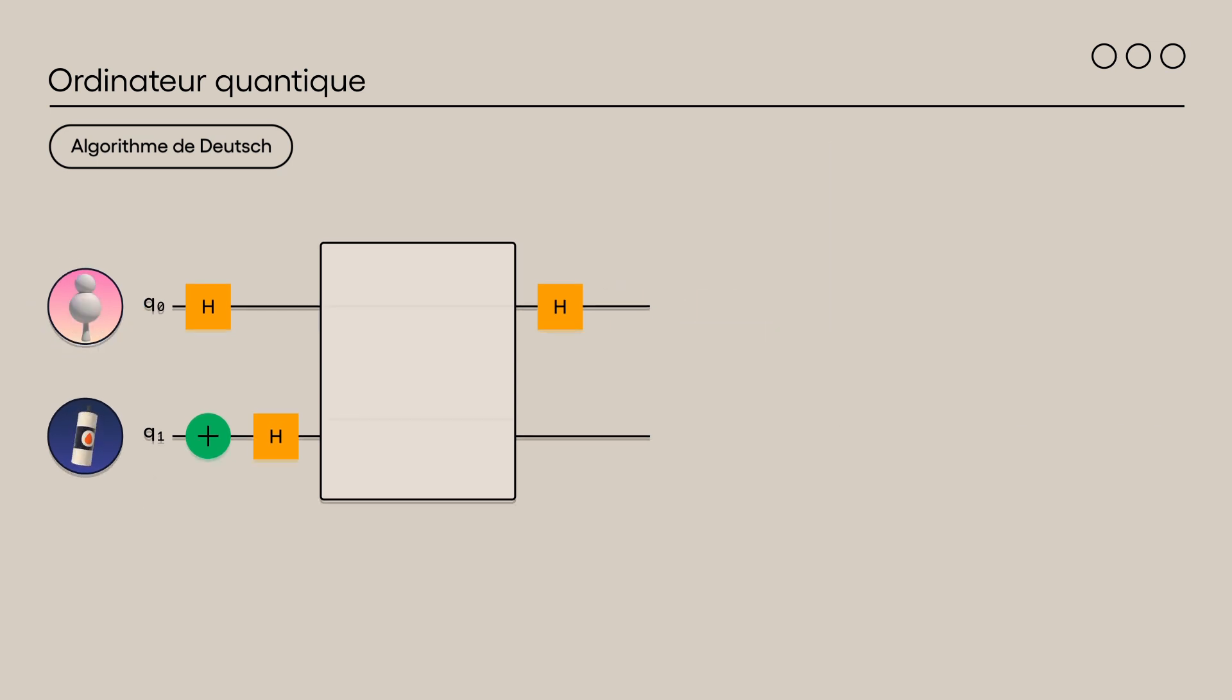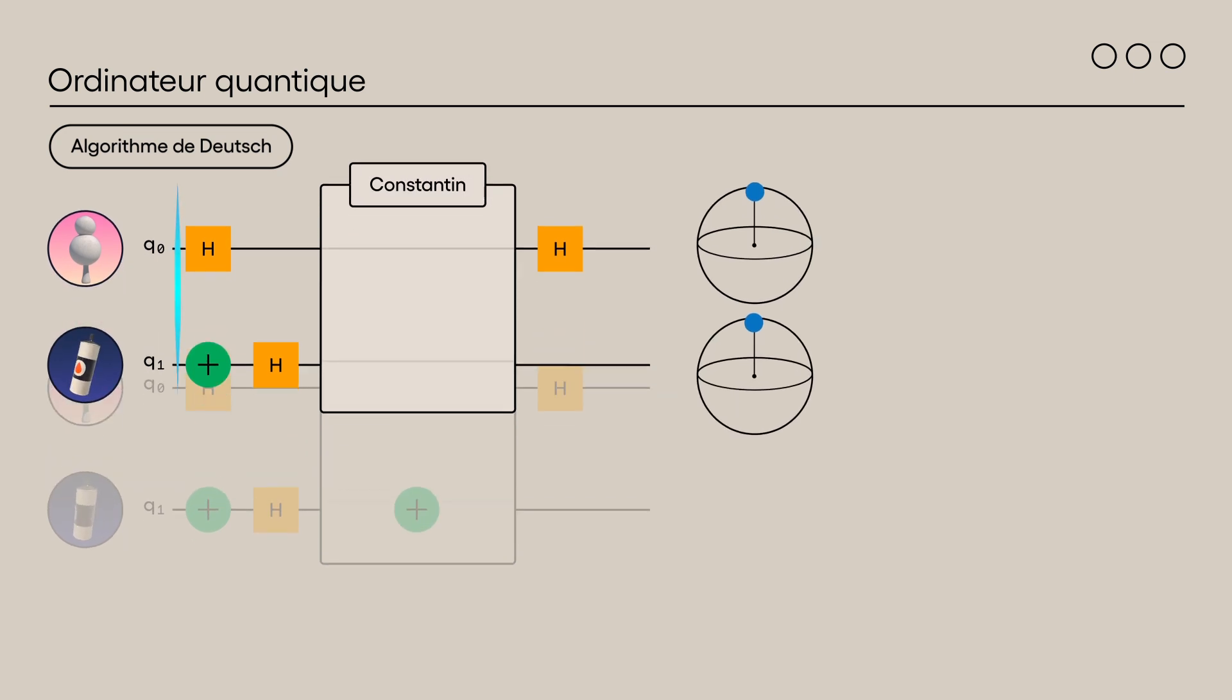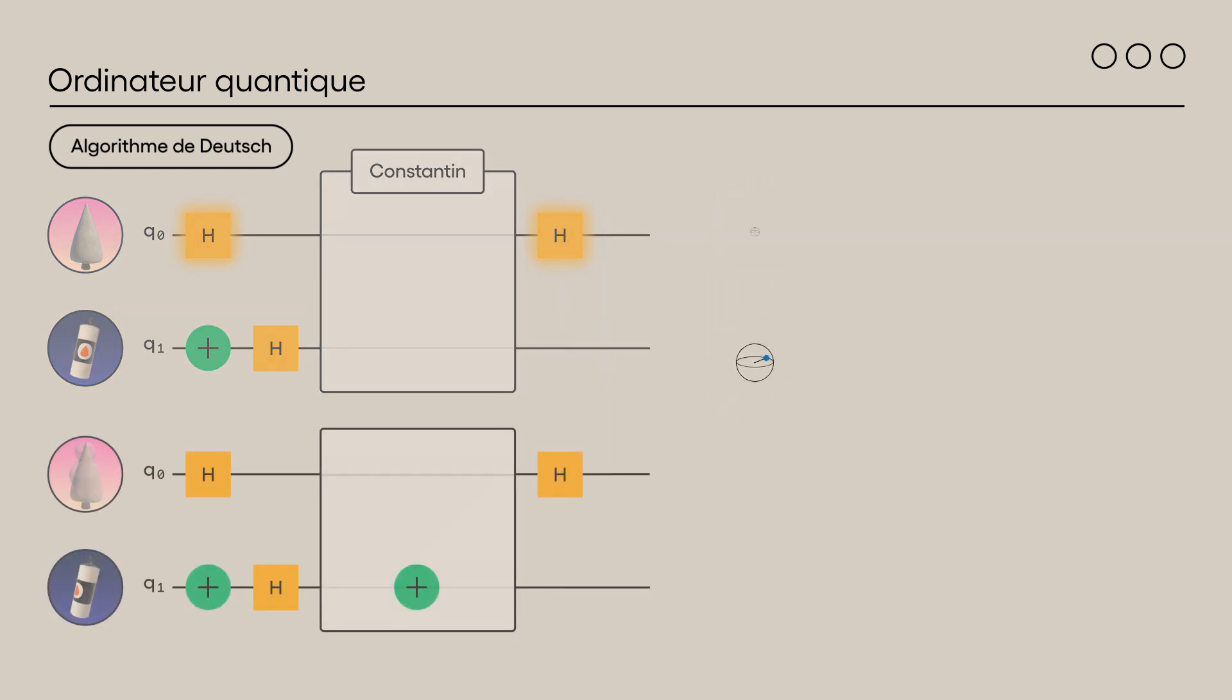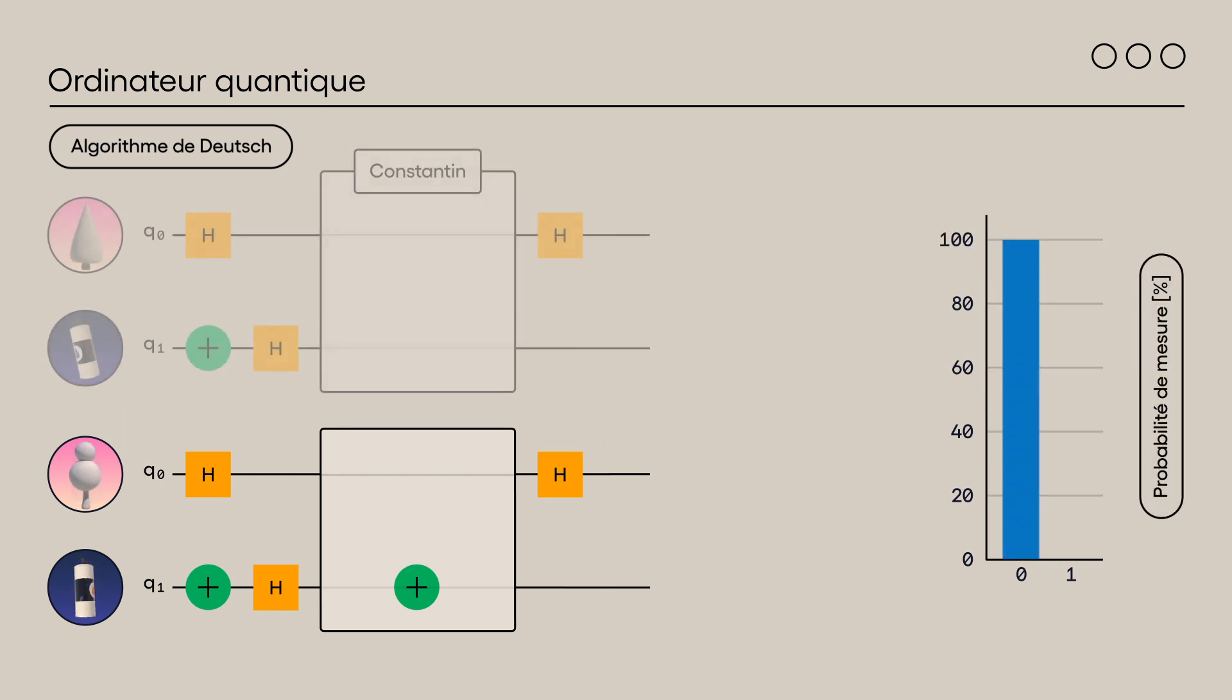Pour comprendre comment fonctionne l'algorithme de Deutsch, revoyons les circuits des actions de Constantin et Equilibria. Dans le cas de Constantin, il n'y a que deux portes Hadamard sur Q0. Comme la porte Hadamard est sa propre inverse, Q0 se retrouve systématiquement dans l'état zéro et le résultat est toujours le suivant. Puisqu'on ne mesure que Q0, on ne présente que les résultats de ce qubit.